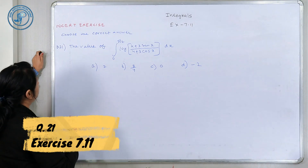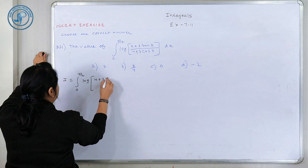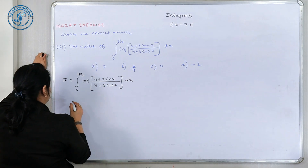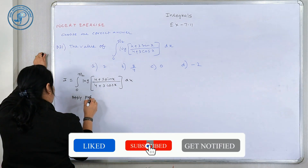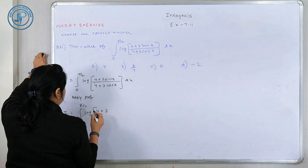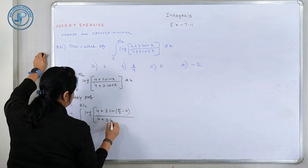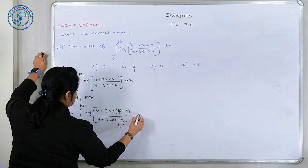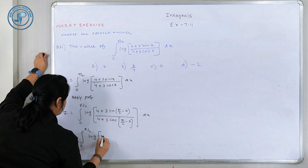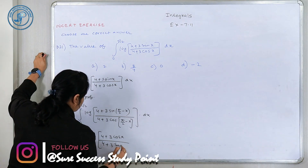Start करते हैं question 21। I = 0 to π/2, log[(4 + 3·sin(X)) / (4 + 3·cos(X))] DX। Property apply करेंगे: 0 to π/2, log[(4 + 3·sin(π/2 minus X)) / (4 + 3·cos(π/2 minus X))] DX, replacing X with A minus X। So I = 0 to π/2, log[(4 + 3·cos(X)) / (4 + 3·sin(X))] DX — because sin(90° minus X) = cos(X)।